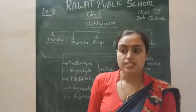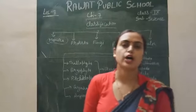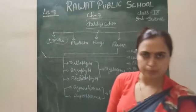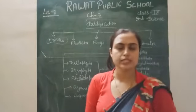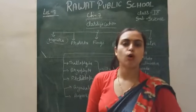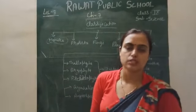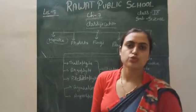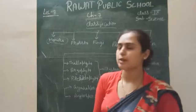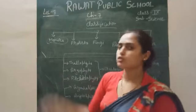Bacteria are prokaryotic, so their nucleus does not consist of a nuclear membrane — nuclear membrane is absent in Monera. They are not called true nucleus; their nucleus is false, a pseudo kind of membrane. So a false nucleus is present in the case of Monera.